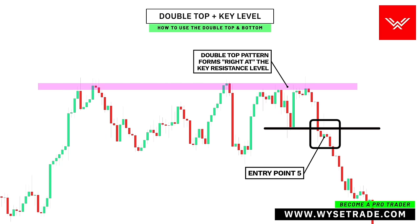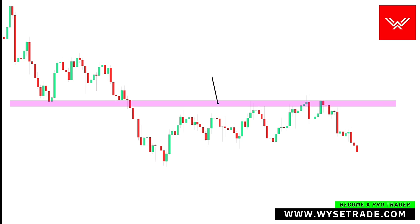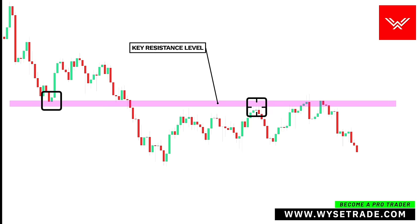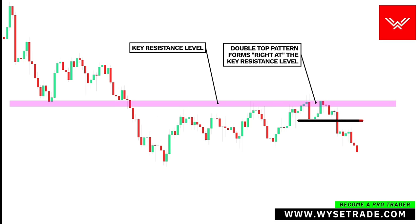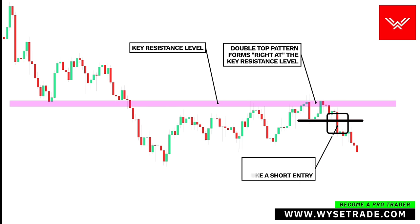One more. You have your key level here that acted as both support and resistance. As price comes back up, it creates a double top pattern right at the key level. Neckline placed like this. And once price breaks through the neckline and makes a lower low, you would take a short entry.